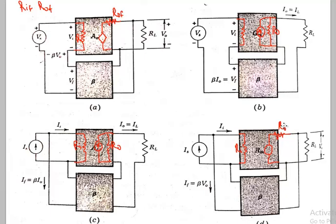Now that you know the placement of RIs and ROs in all the feedback configurations, let me write down the names of the configurations. This is voltage series, this is current series, this is current shunt, and this is voltage shunt. Now let's talk about output resistance first.